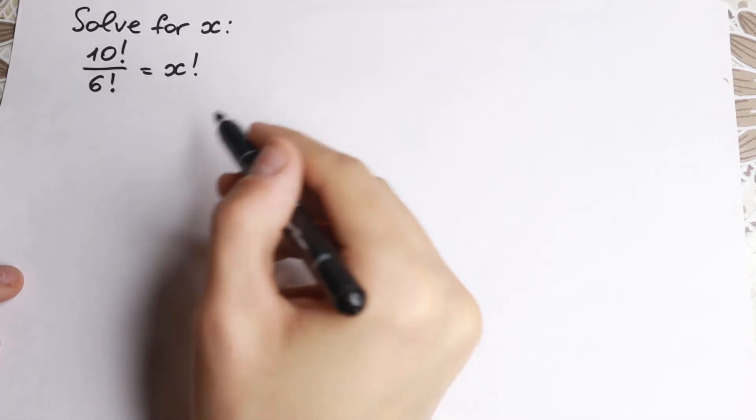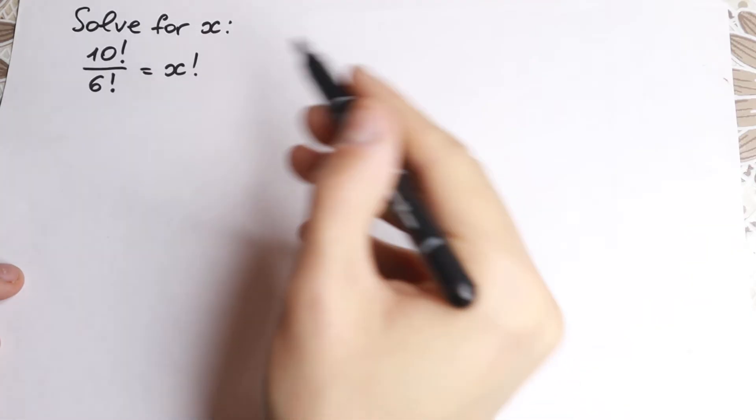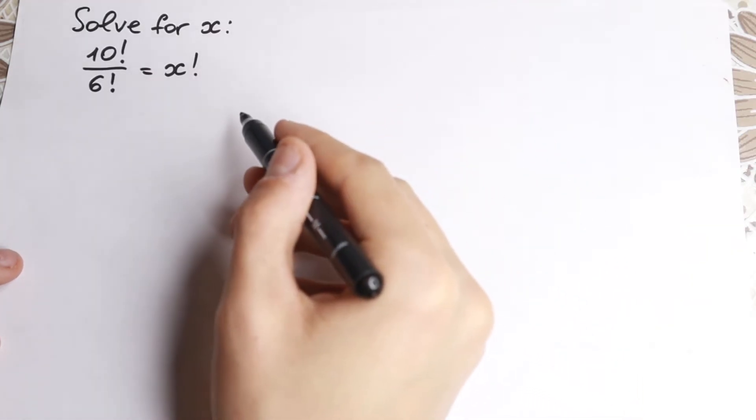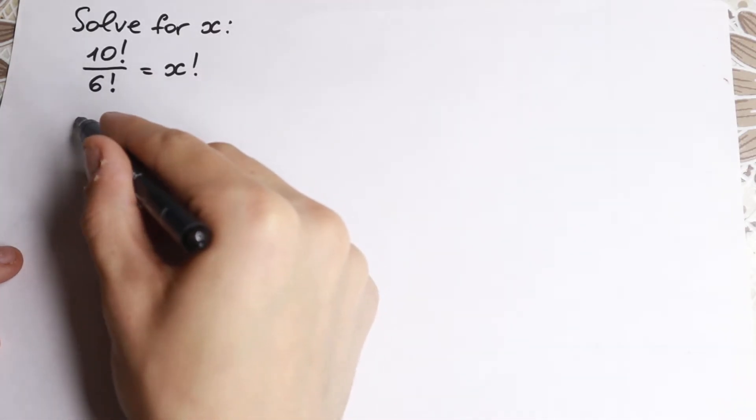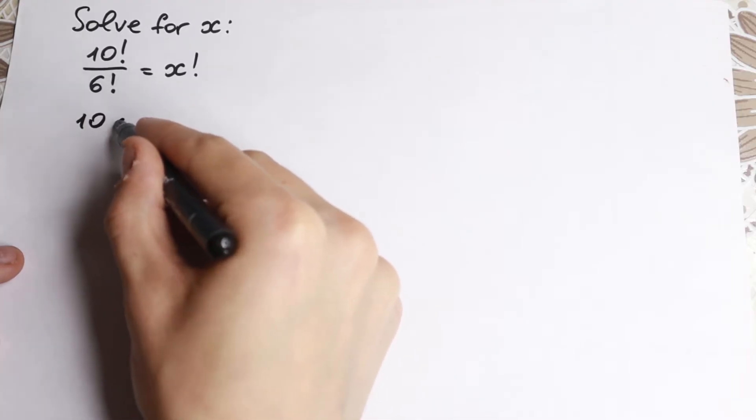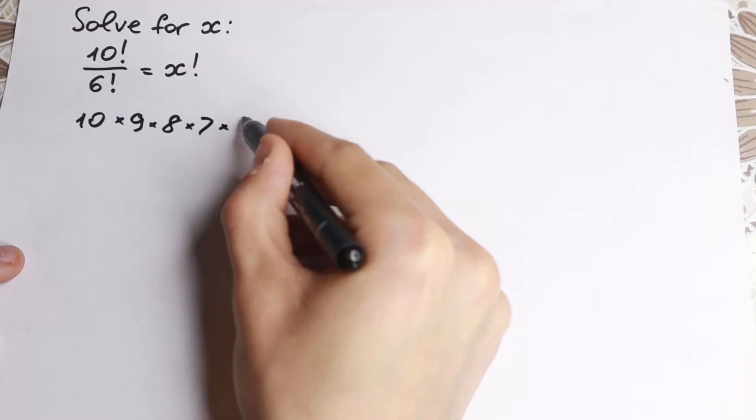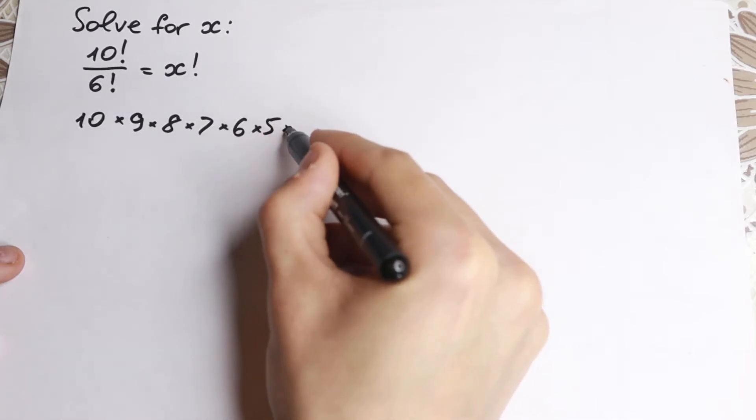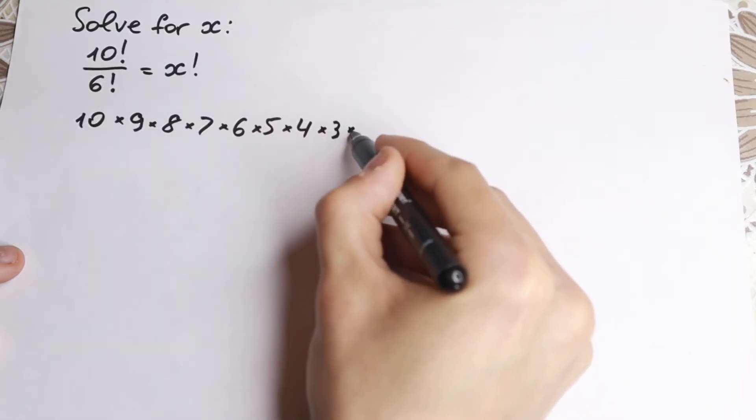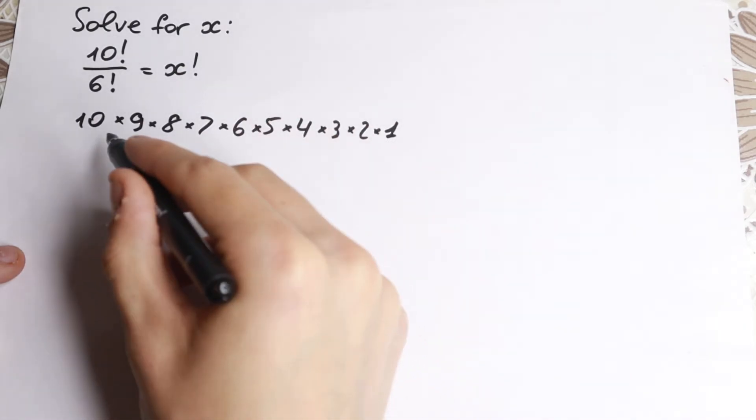We know that 10 factorial is a product from 10 to 1 or from 1 to 10, doesn't matter. Let's try to write this 10 factorial. We know that this is a product, so 10 times 9 times 8 times 7 times 6 times 5, 4, 3, 2, 1. This is our 10 factorial.